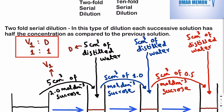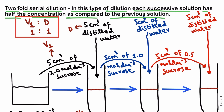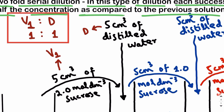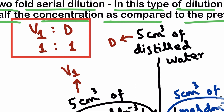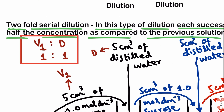We will first discuss twofold serial dilution. In this type, each successive solution has half the concentration as compared to the previous solution. For twofold serial dilution, the ratio of v1 to d should be 1:1 — where v1 is the volume of the stock solution you use and d is the volume of the distilled water.